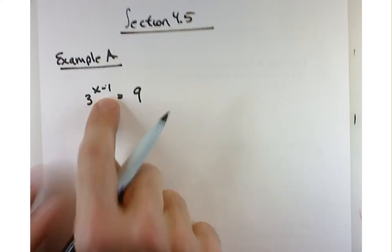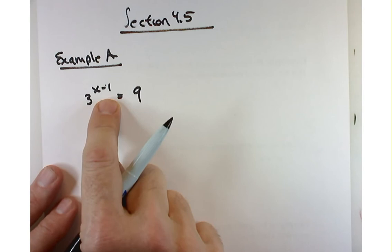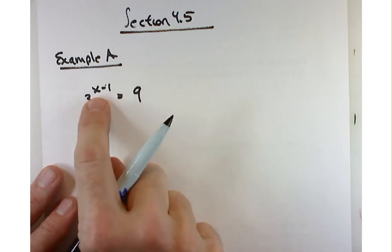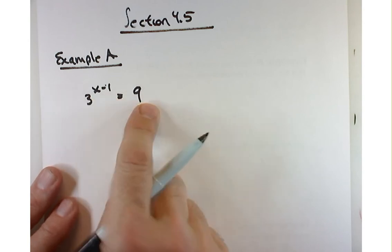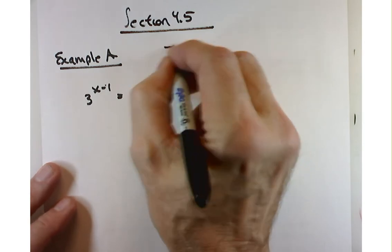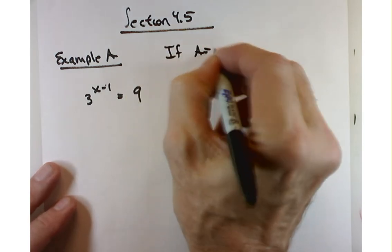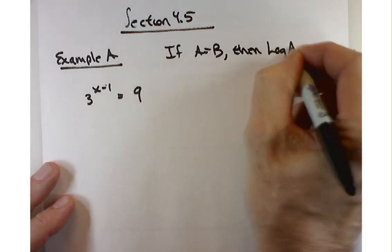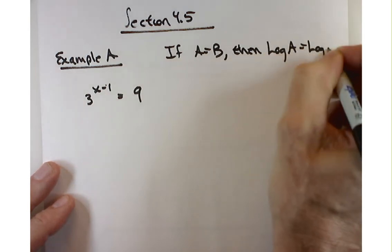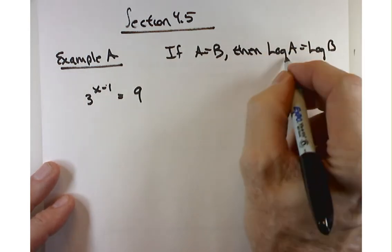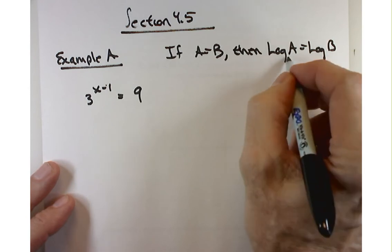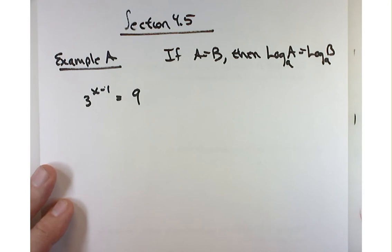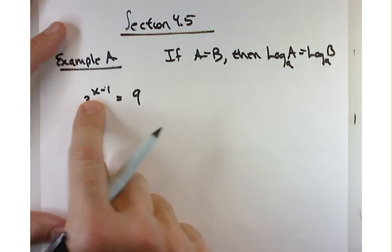One of the ways you can solve exponential equations is by taking the log on both sides. So if you have a equals b, then log of a equals log of b. It doesn't matter what base you choose here. But that's what I'm going to do — take the log on both sides.